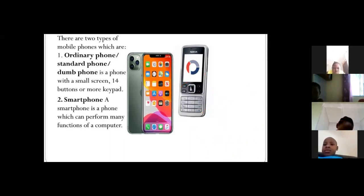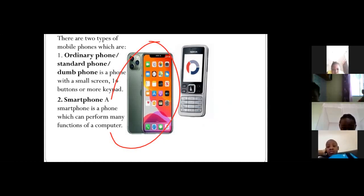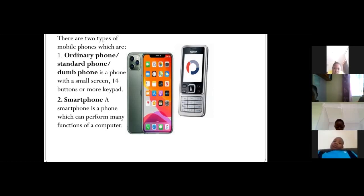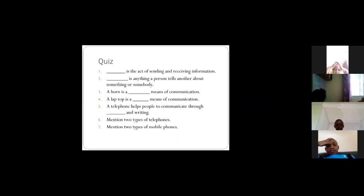The keypad has buttons. On the other side, this is the smartphone — this is the iPhone 11 Pro Max, one of the very expensive smartphones in the world. A smartphone is a phone which can perform many functions of a computer. An ordinary phone is a phone with a small screen and 14 or more buttons.